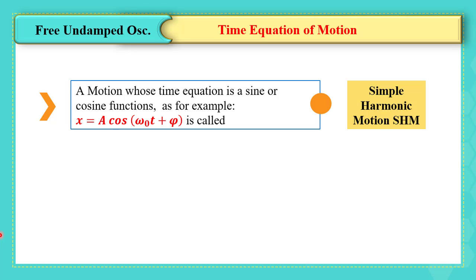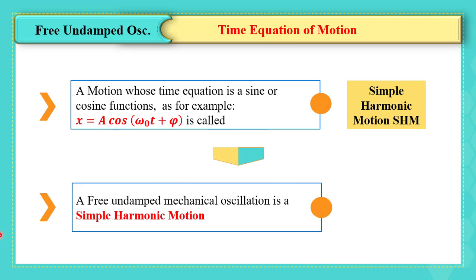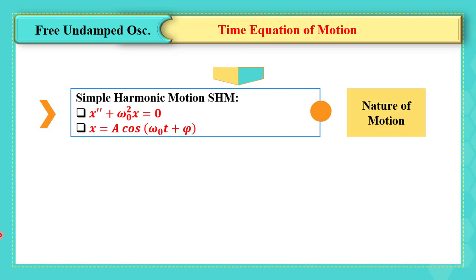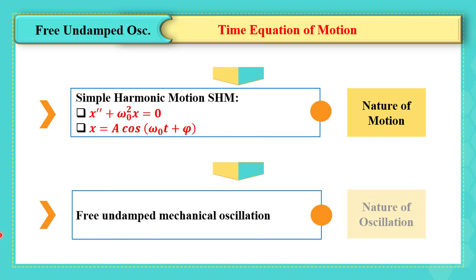A free undamped mechanical oscillation is therefore a simple harmonic motion. It is important to know that to define the nature of motion, we say it is a simple harmonic motion if the differential equation has the form x double prime plus omega 0 squared x equals 0, or if the time equation is given as a cosine (omega 0 t plus phi) or a sine (omega 0 t plus phi). But if they ask about the type of oscillations, the answer should always be: free undamped mechanical oscillation. It is enough for this video.